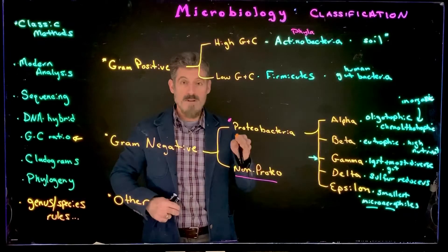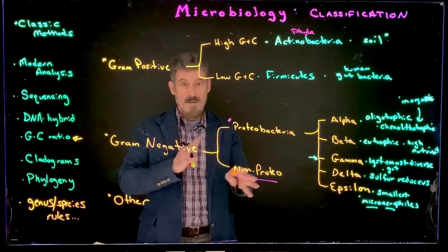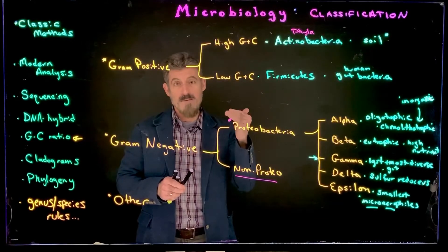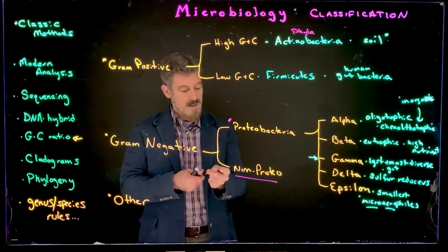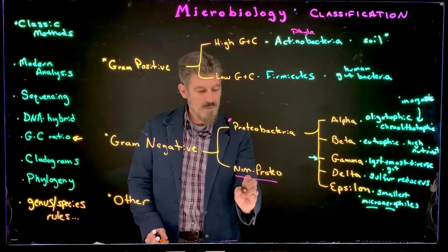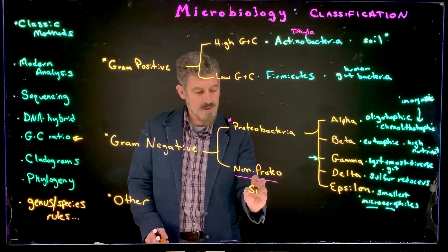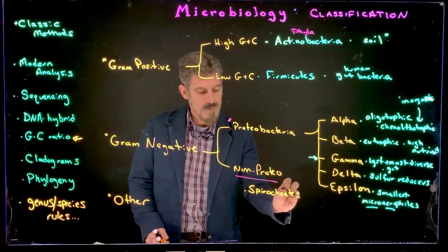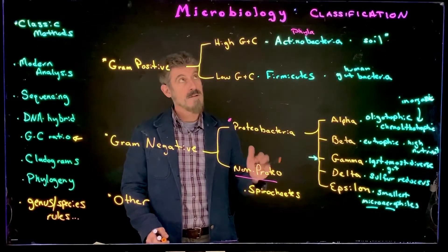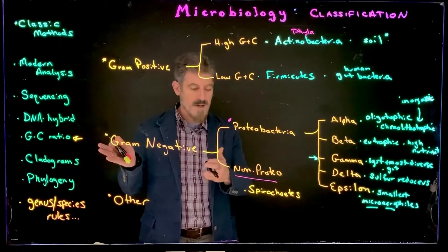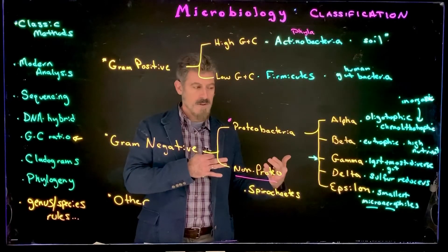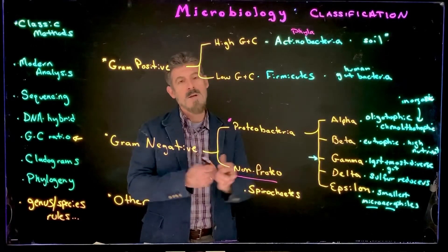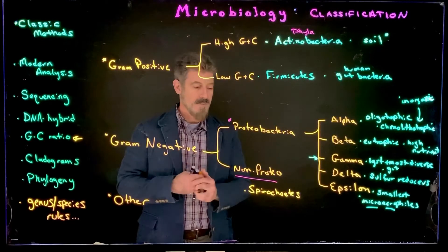These non-proteo bacteria actually don't always stain gram-negative. They're categorized here because of genetic relationships based on DNA sequencing. One of the first groups we have here are the spirochetes. Some classifications won't call them gram-negative based on the stain, but based on DNA relationships, they're clustered under non-proteo gram-negative bacteria.